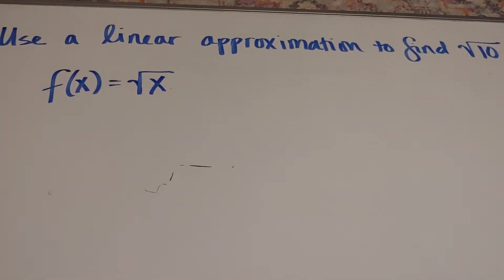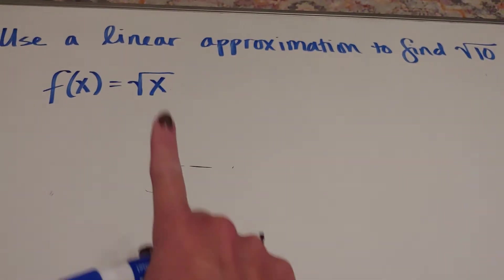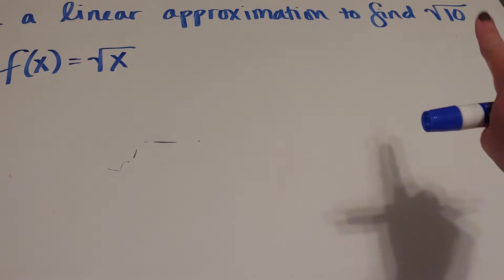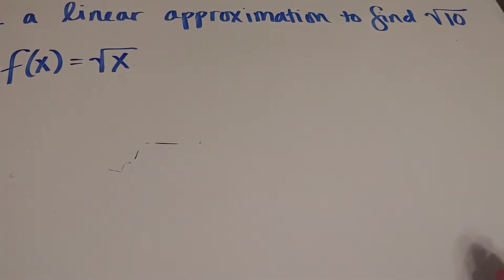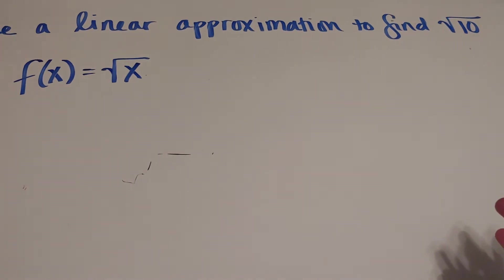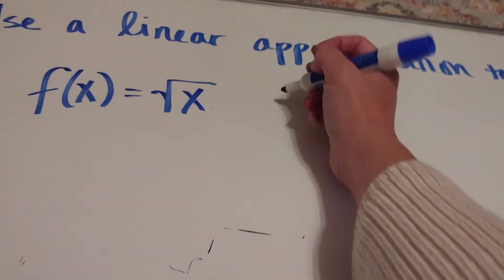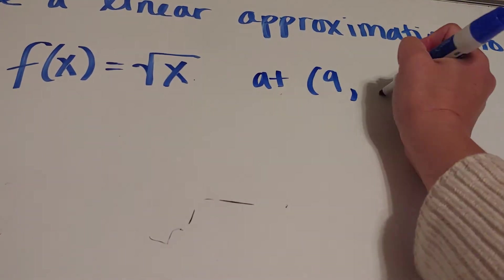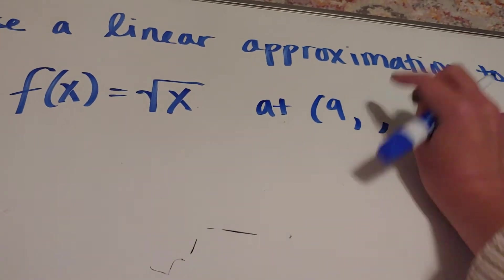The next thing is that I don't want to put this tangent line at zero or one. I want to get as close to 10 as possible. That's a perfect square. So the closest perfect square to 10 is nine. So we're going to put a tangent line at x is nine. And if x is nine, the square root of nine is three.